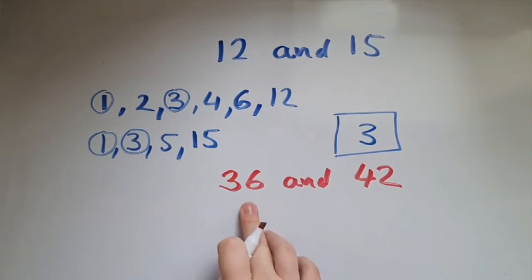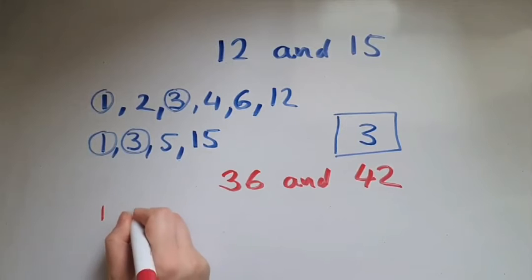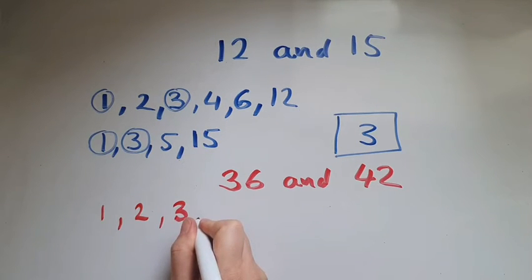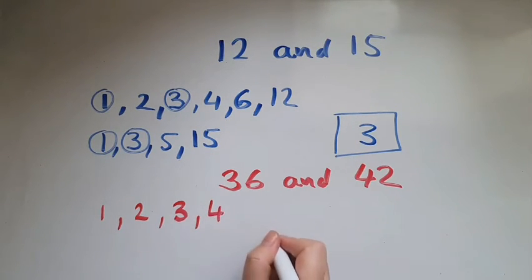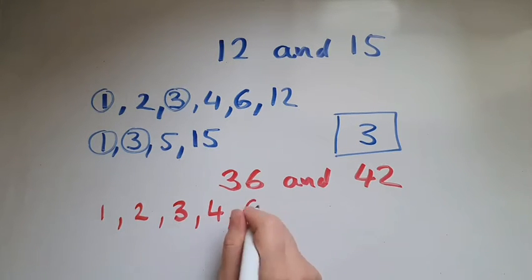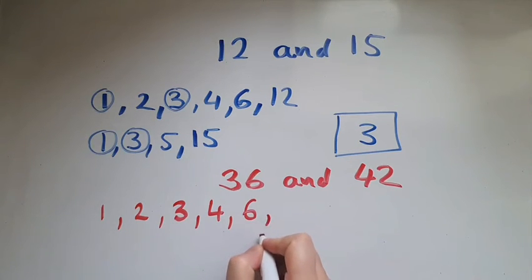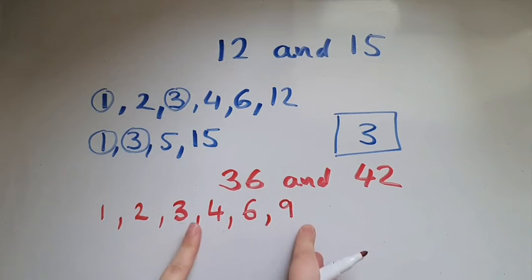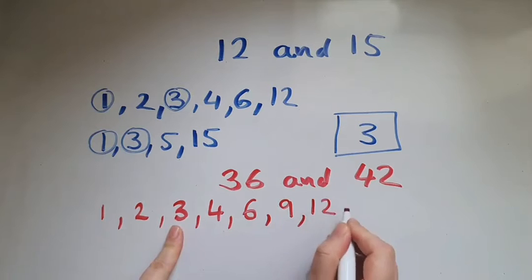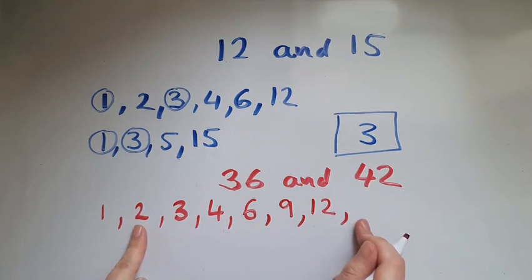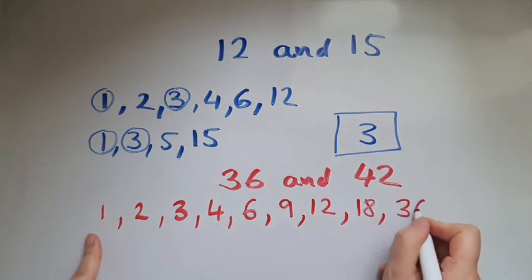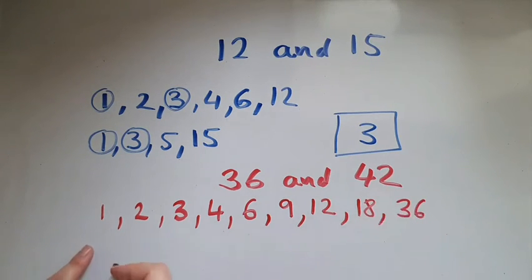Let's start with the factors of 36. So we have 1, 2, 3 as well because 3 times 12 is 36. 4 times 9 gives us 36. 5 is not. 6 yes, because 6 times 6 gives us 36. Then not 7, not 8, but 9. Notice 4 times 9 gives us 36. The next one: 3 times 12 gives us 36. 2 times 18 gives us 36. And 1 times 36 gives us 36.